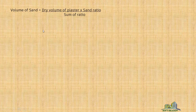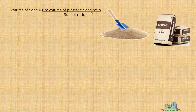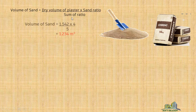Volume of sand equals dry volume of plaster multiplied by the sand ratio, divided by the sum of ratio. The sand ratio in the given mix ratio is 4, and the sum of ratio is 5. Therefore, volume of sand equals 1.542 multiplied by 4 divided by 5, which gives 1.234 cubic meters.